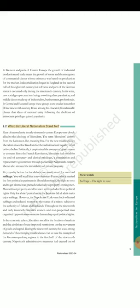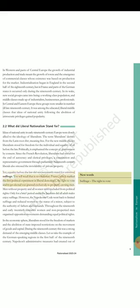Section 2.2: What did liberal nationalism stand for? Ideas of national unity in early 19th century Europe were closely allied to the ideology of liberalism. The term 'liberalism' derives from the Latin root 'liber', meaning free. For the new middle classes liberalism stood for freedom for the individual and equality of all before the law. Politically, it emphasized the concept of government by consent. Since the French Revolution, liberalism had stood for the end of autocracy and clerical privileges, a constitution and representative government through parliament. 19th century liberals also stressed the inviolability of private property. Yet equality before the law did not necessarily stand for universal suffrage. In revolutionary France, which marked the first political experiment in liberal democracy, the right to vote and to get elected was granted exclusively to property-owning men. Men without property and all women were excluded from political rights. Only for a brief period under the Jacobins did all adult males enjoy suffrage. However, the Napoleonic Code went back to limited suffrage and reduced women to the status of a minor, subject to the authority of fathers and husbands.